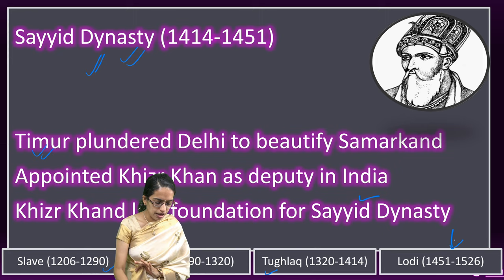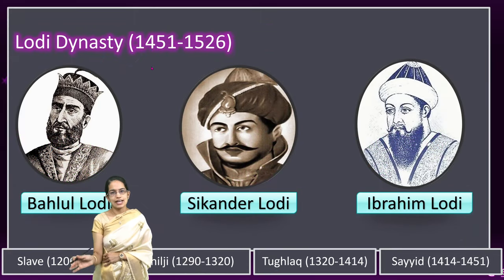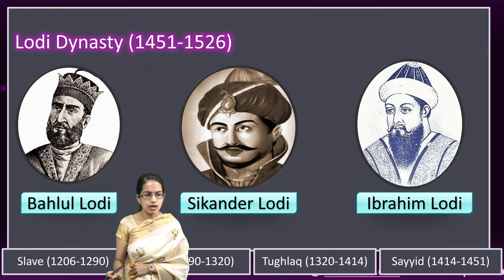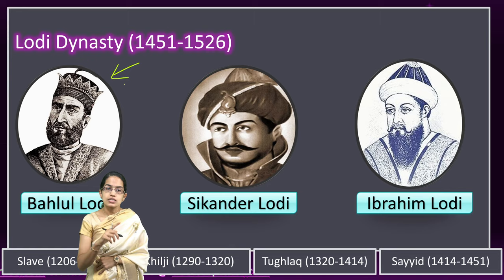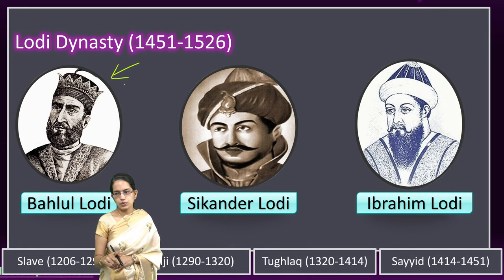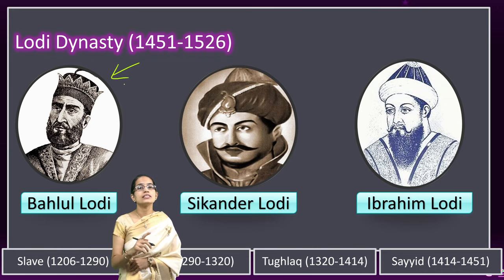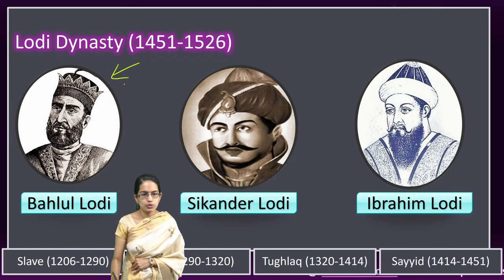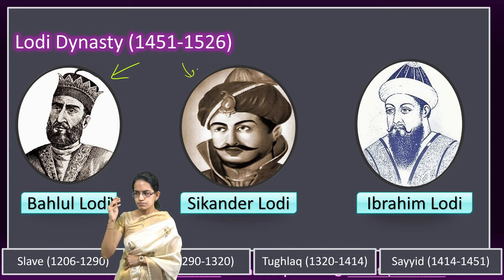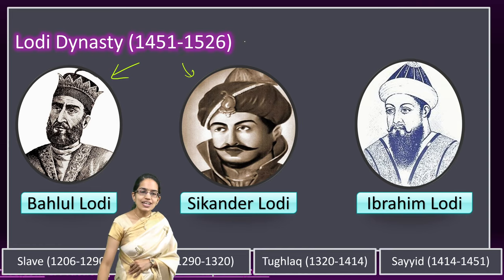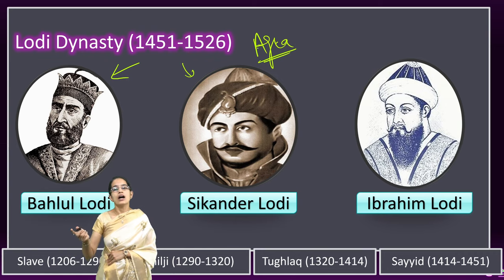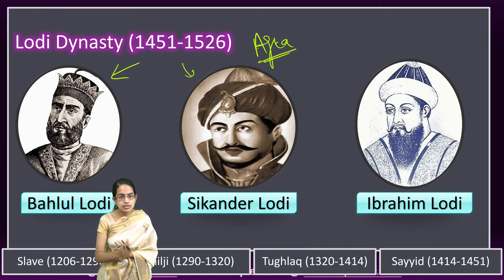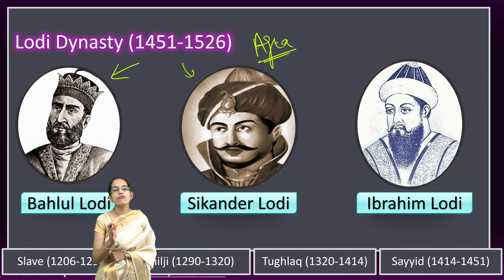Bahlul Lodi was the governor of Punjab and Sindh. Under Bahlul Lodi, the Lodi dynasty was established. Being an Afghan ruler, he saw that the weak Sayyids were the right time at which their dynasty could be overthrown, and he established the Lodi dynasty as its first founder. Next to him, one of the most able rulers of the Lodi dynasty was Sikandar Lodi. Sikandar Lodi is known to have established Agra, which later saw many architectural marvels under the Mughal Empire — but Agra was first established by Sikandar Lodi.